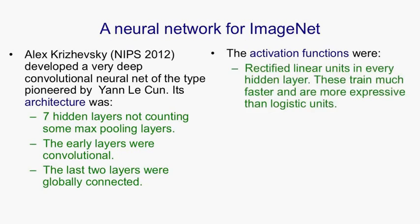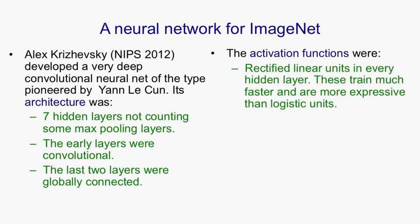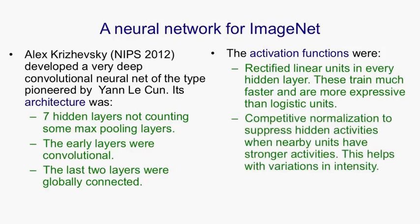The activation functions were rectified linear units in every hidden layer. These train much faster than logistic units and are more expressive. Most people seriously applying deep neural networks to real images for object recognition have now switched to rectified linear units. The network also used competitive normalisation within a layer to suppress the activity of a unit if other units looking at nearby localities are very active, which helps a lot with variations in intensity.